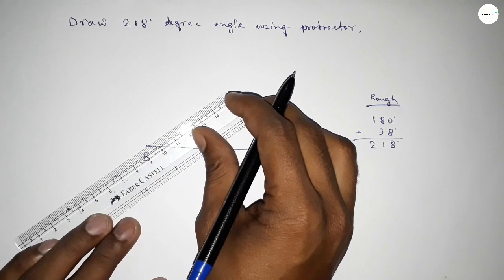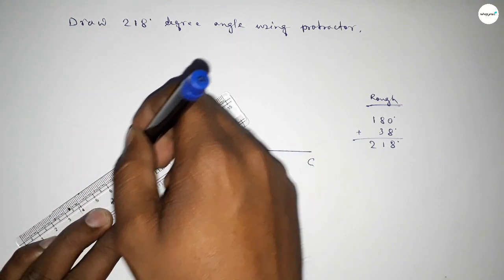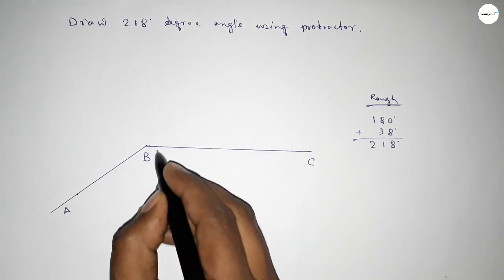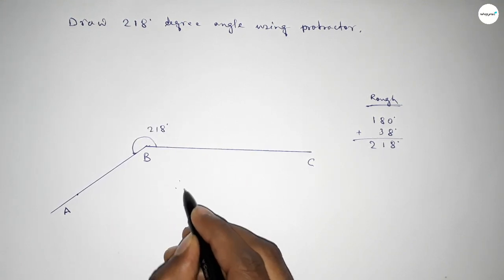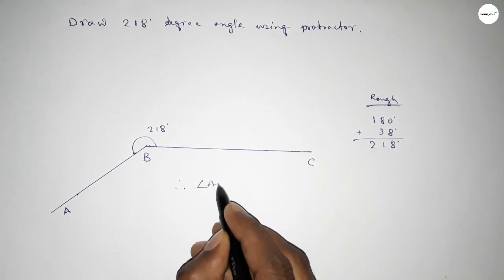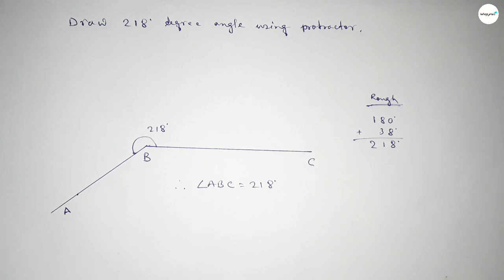Now joining in this side and taking here point A. So angle ABC up to this is 218 degree angle. So therefore angle ABC equals 218 degree angle. That's all, thanks for watching.